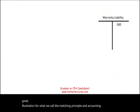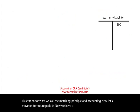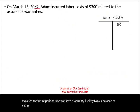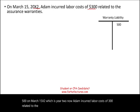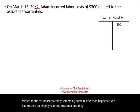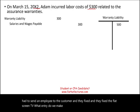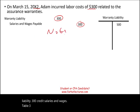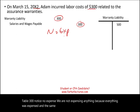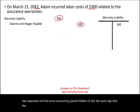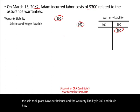Now let's move on to future periods. We have a warranty liability balance of $500. On March 15th, year X2, Adam incurred labor costs of $300 related to the assurance warranty — an employee was sent to the customer and fixed the flat screen TV. The entry is: debit warranty liability $300, credit salaries and wages payable $300. Notice there is no expense — everything was expensed in the prior accounting period. Our warranty liability balance is now $200.